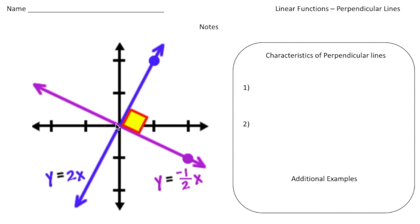Alright, so take a look at this purple line and this blue line. When they intersect, notice how they make a right angle. That's a characteristic of perpendicular lines. So number one thing I want you to write down is that perpendicular lines intersect to form right angles. Again, they make that nice 90-degree angle when they intersect.